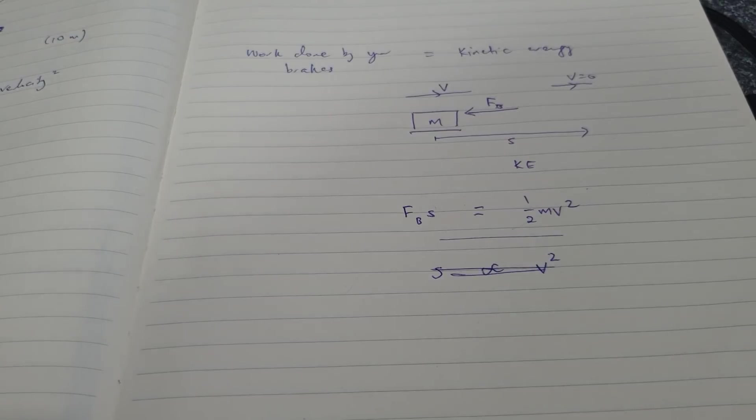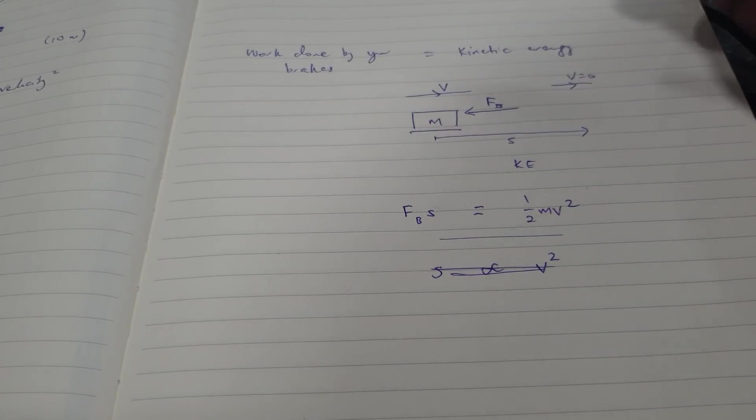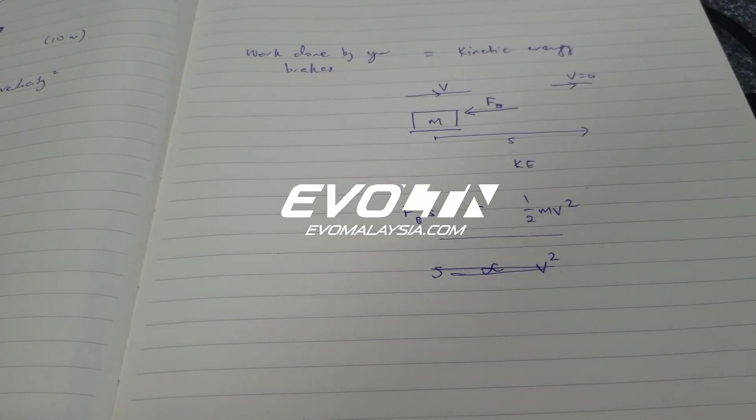This is a simple mathematical demonstration to show that regardless of what car you drive, how heavy the car is, or how good your brakes are, whenever you double your speed, you increase your braking distance by four times.